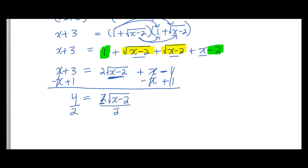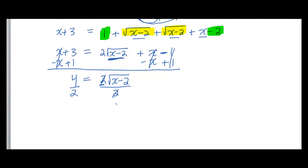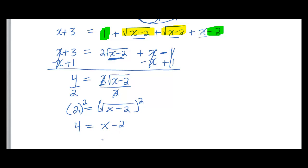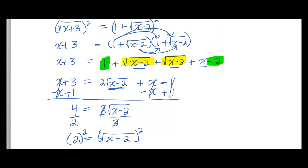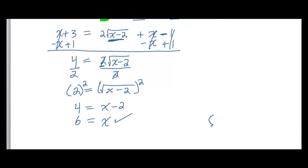Now I square both sides: 4 equals x minus 2. Adding 2 to both sides gives x equals 6. That was an example where we had to repeat the process. The solution x equals 6 does check out in the original equation. If you want to write it as a solution set, it's {6}.